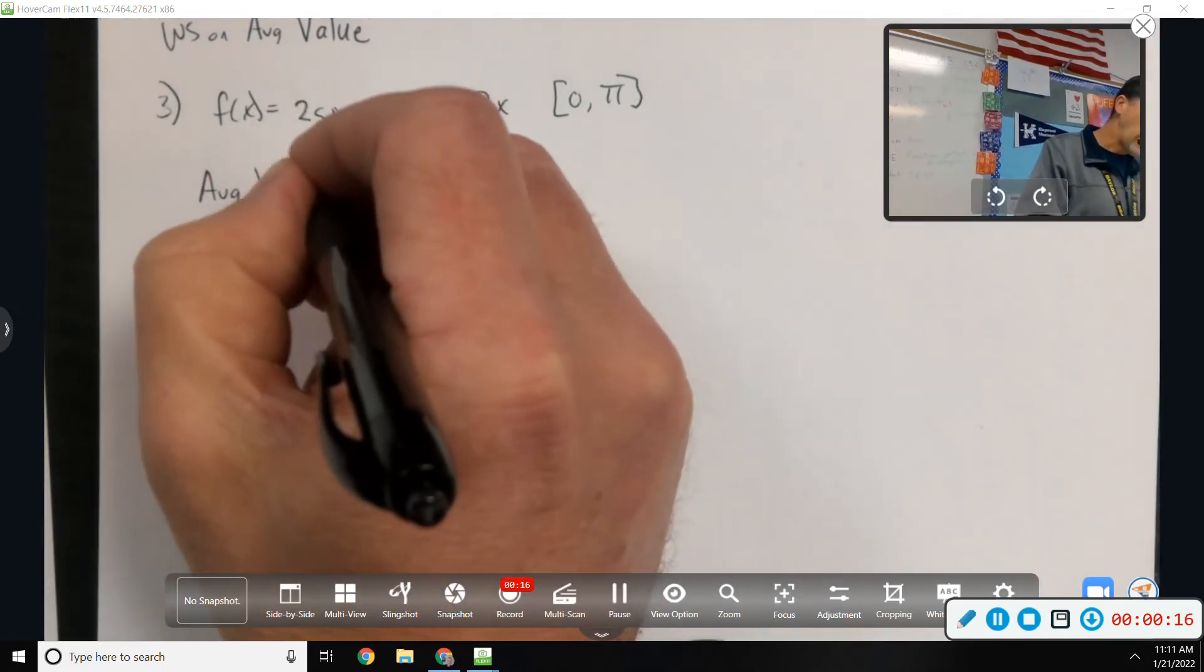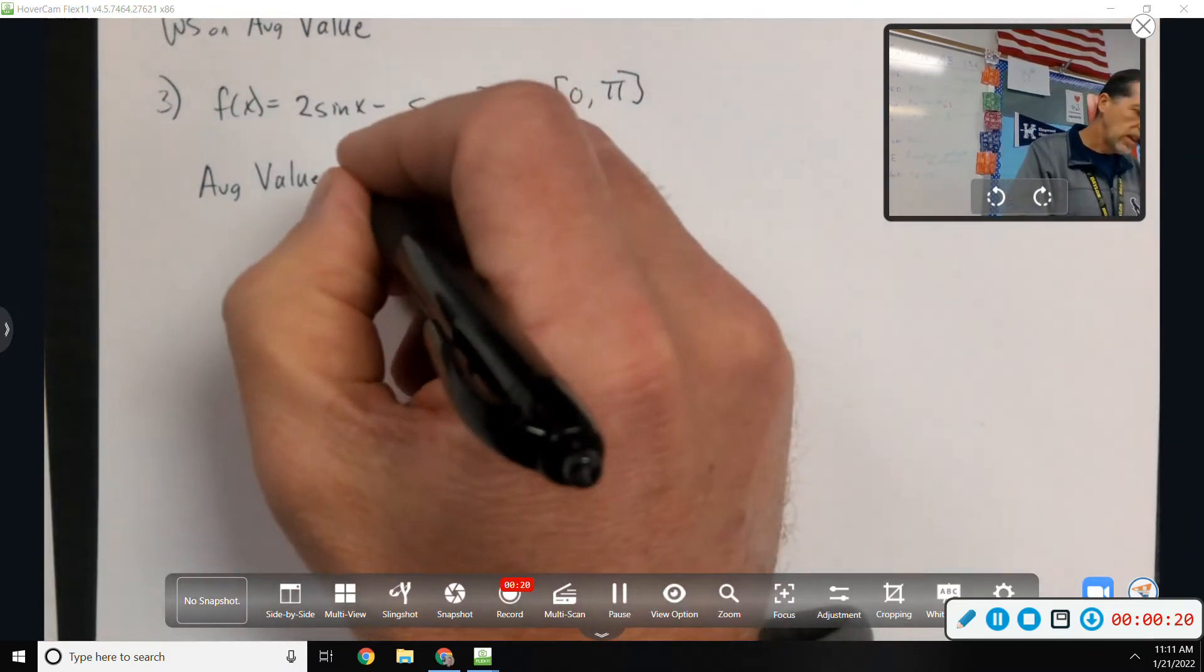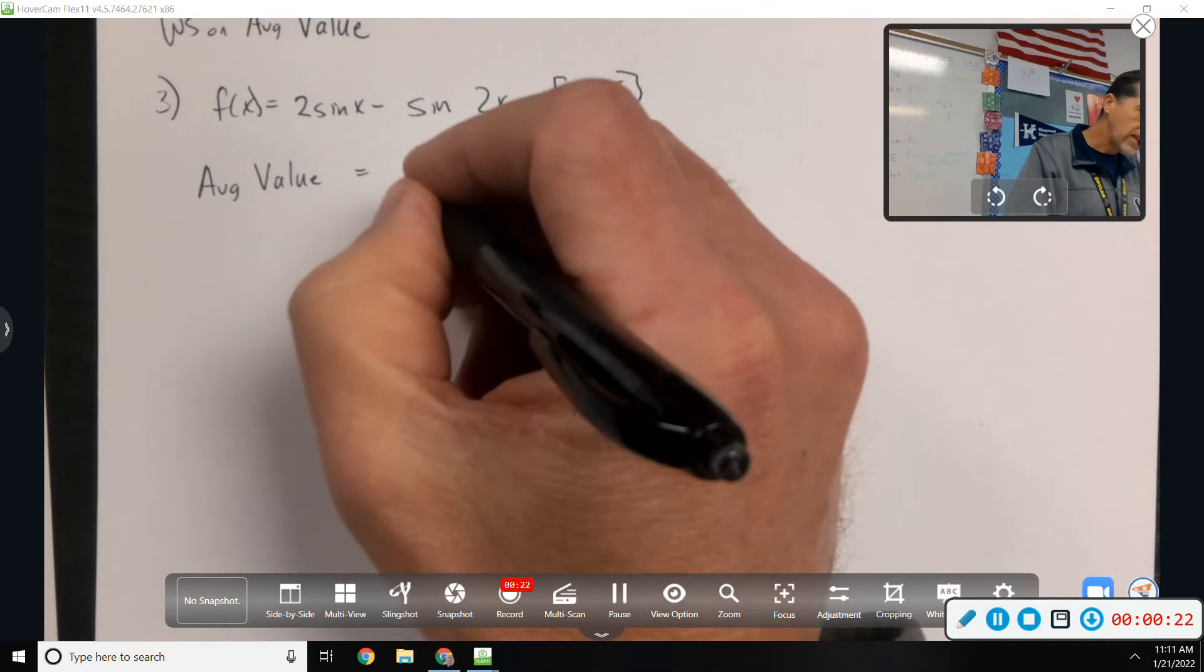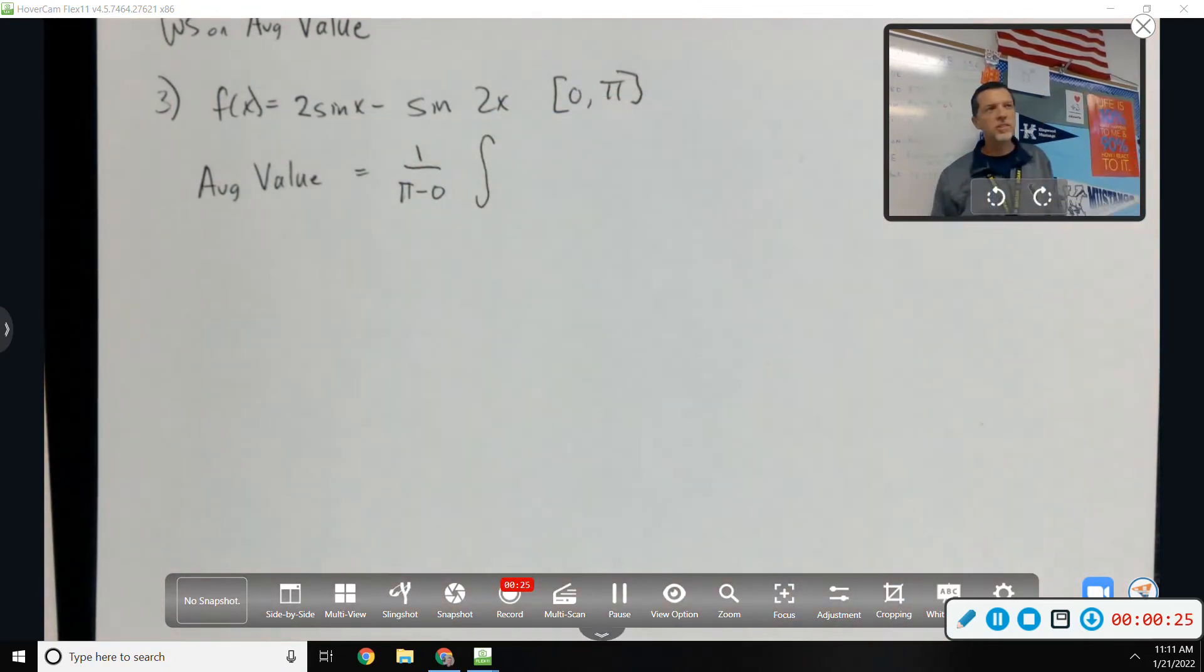The average value, the average height, the Y value, all that kind of means the same thing. One over the width times the area, or just the area divided by the width, tells us the average value.